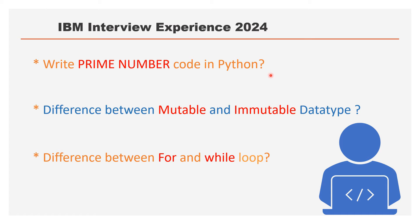Every interviewer knows you are under pressure, so they will be understanding. The next questions are: difference between mutable and immutable data types, and difference between for and while loop. These are commonly known questions — you should be able to answer both.